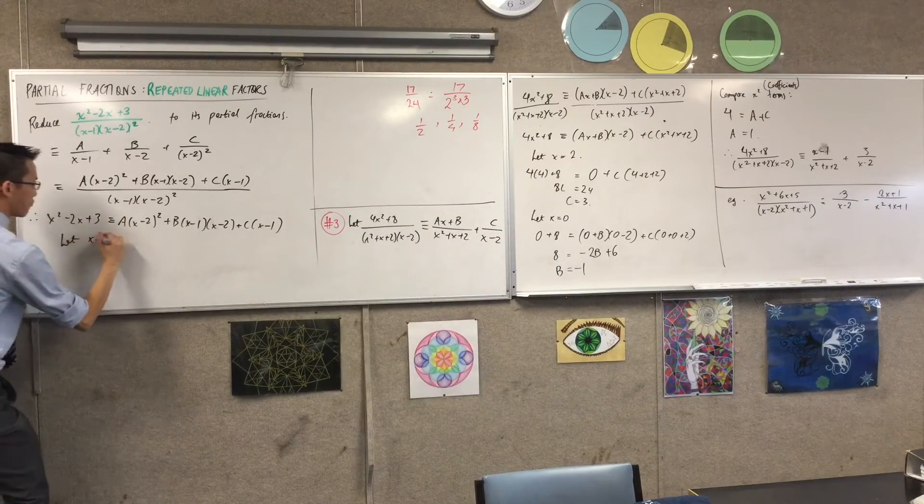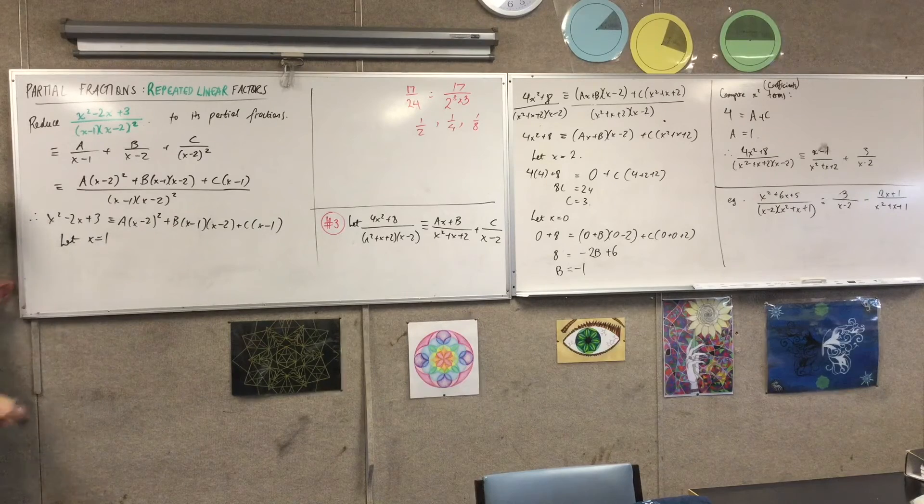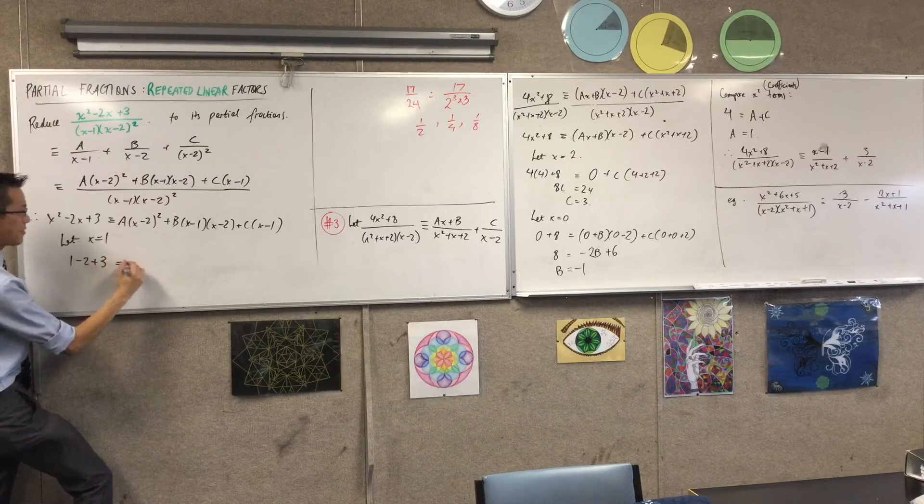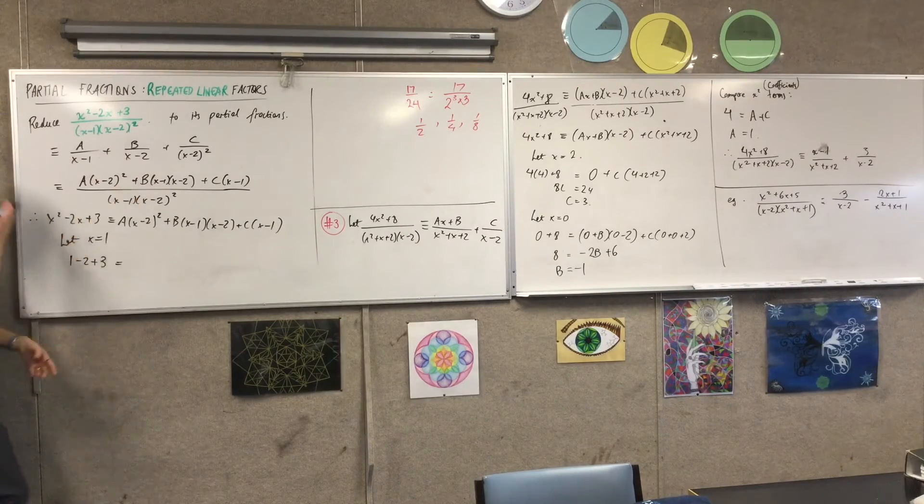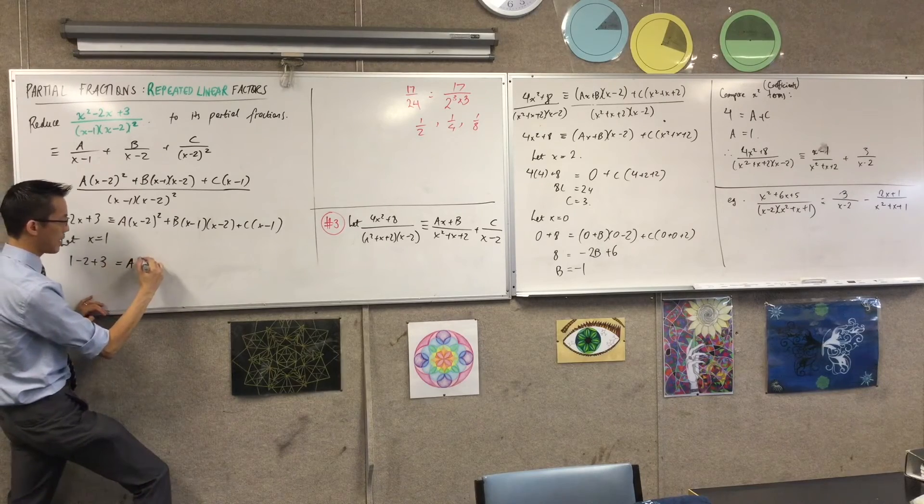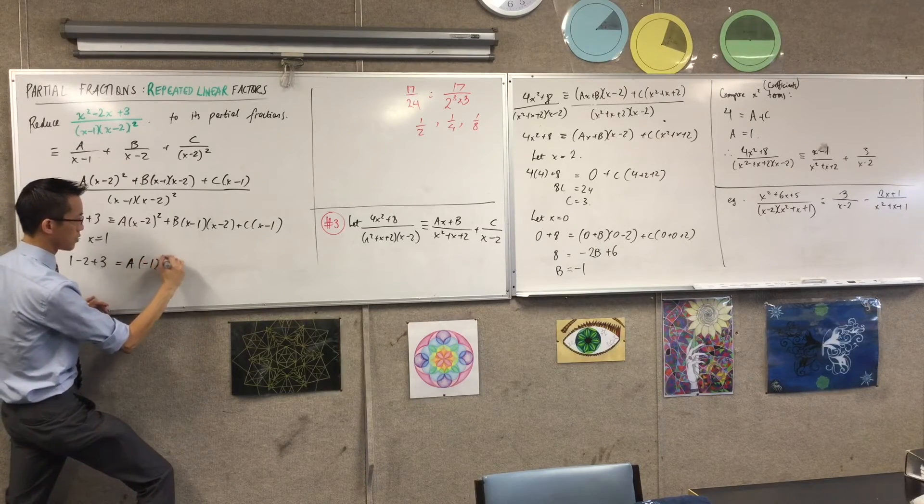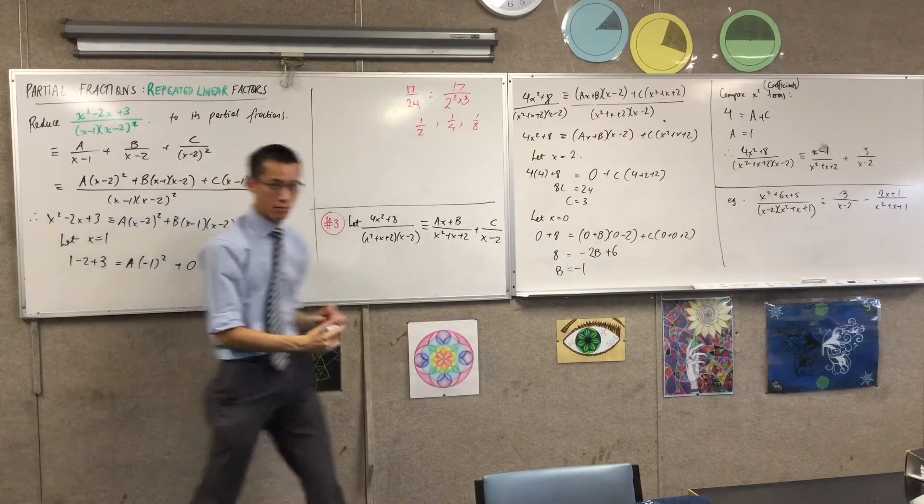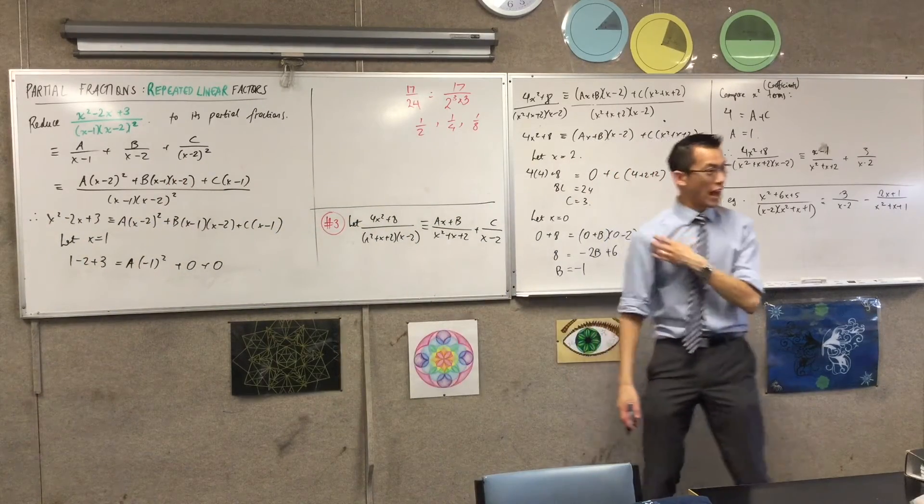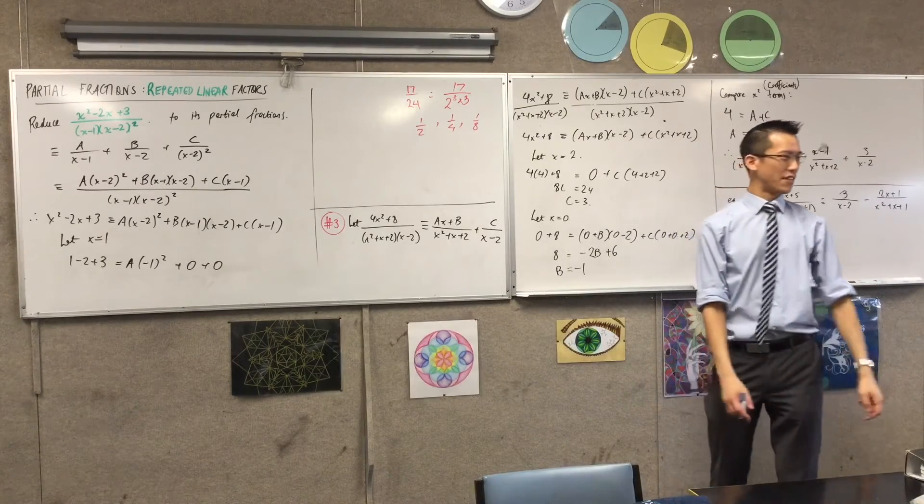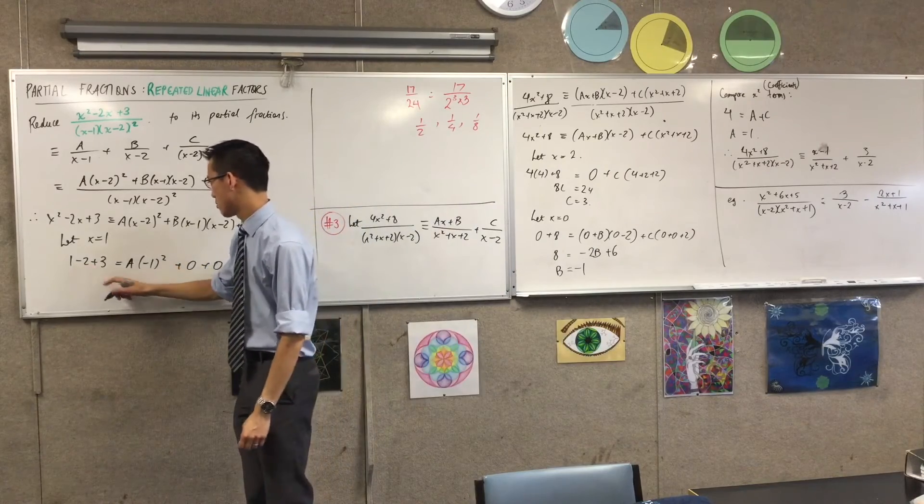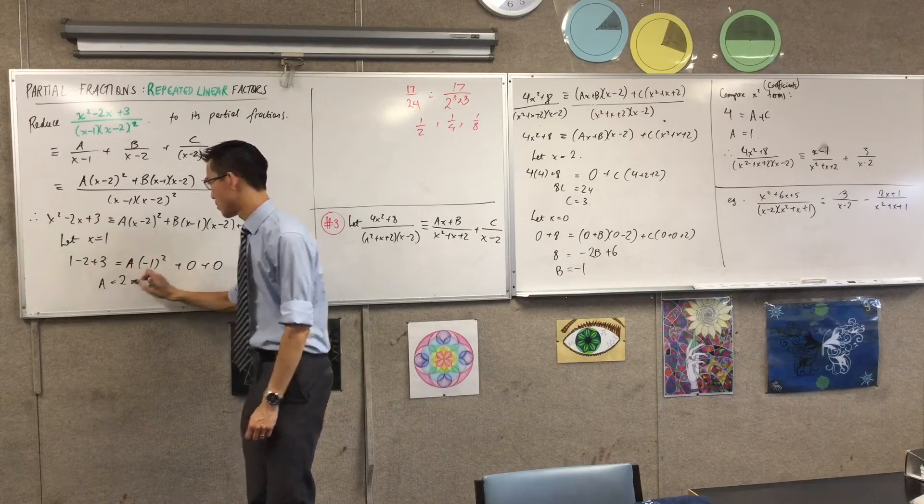Okay. So, let's let x equal 1. What do you get on the left-hand side? 1 minus 2 plus 3. Good. And that's equal to, for this particular value, a rather. So, this is going to be a times negative 1 squared. This is going to become 0, and this is going to become 0. Do you see that? So, it looks like I've just got a on the right-hand side. What do I get on the left? 2. Are you happy with that?